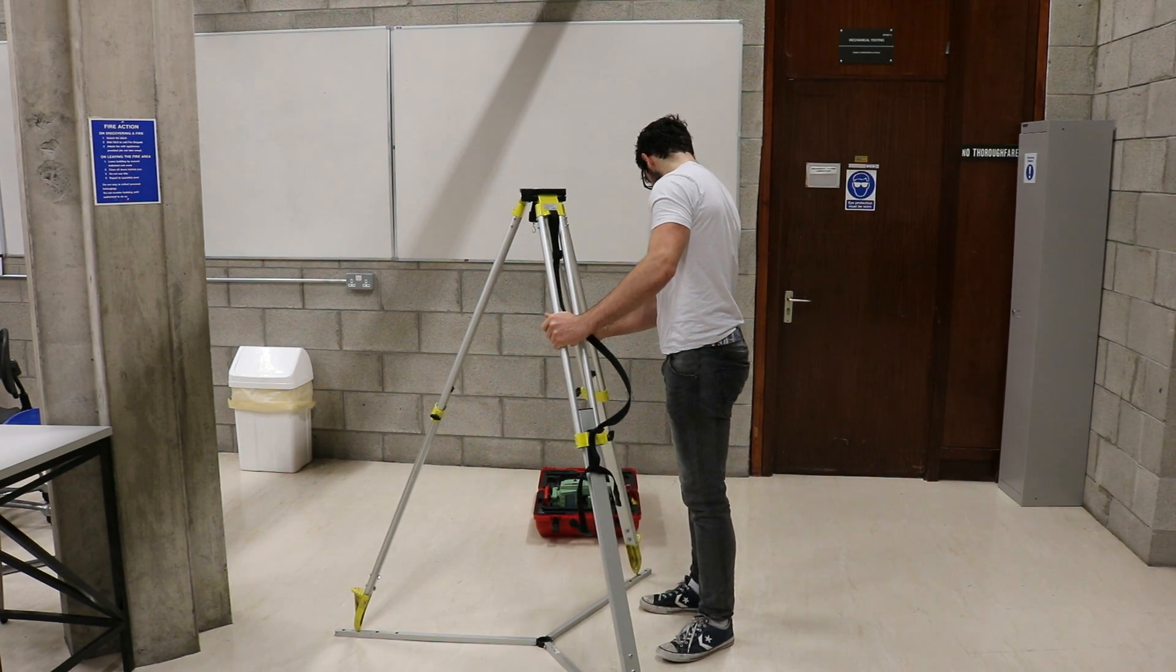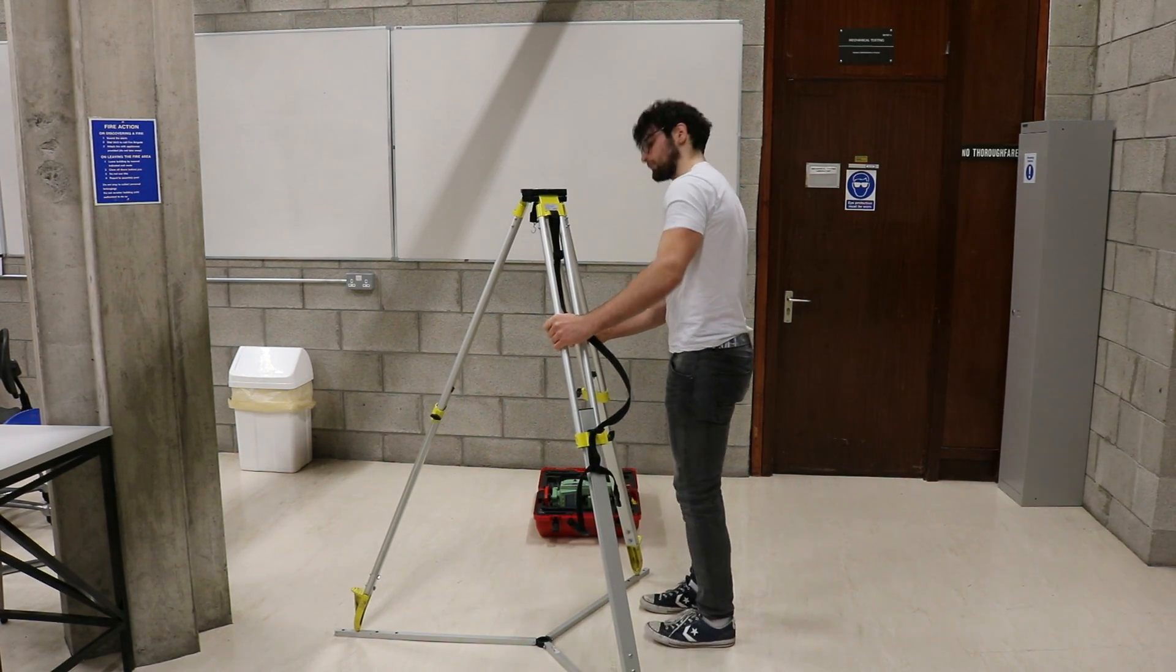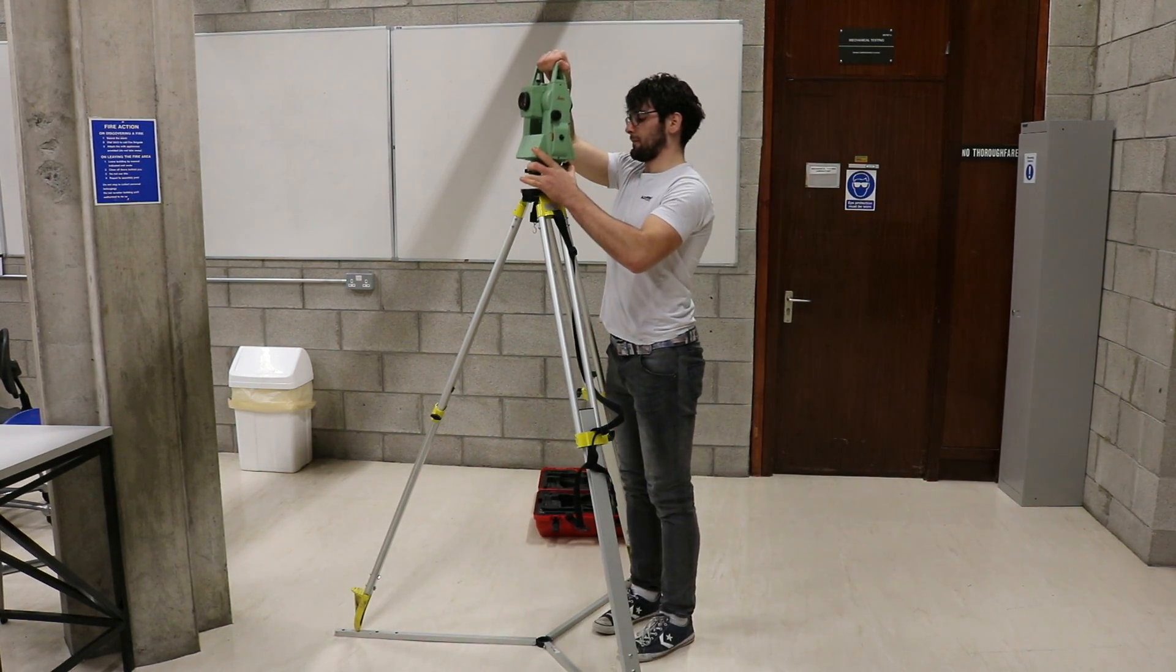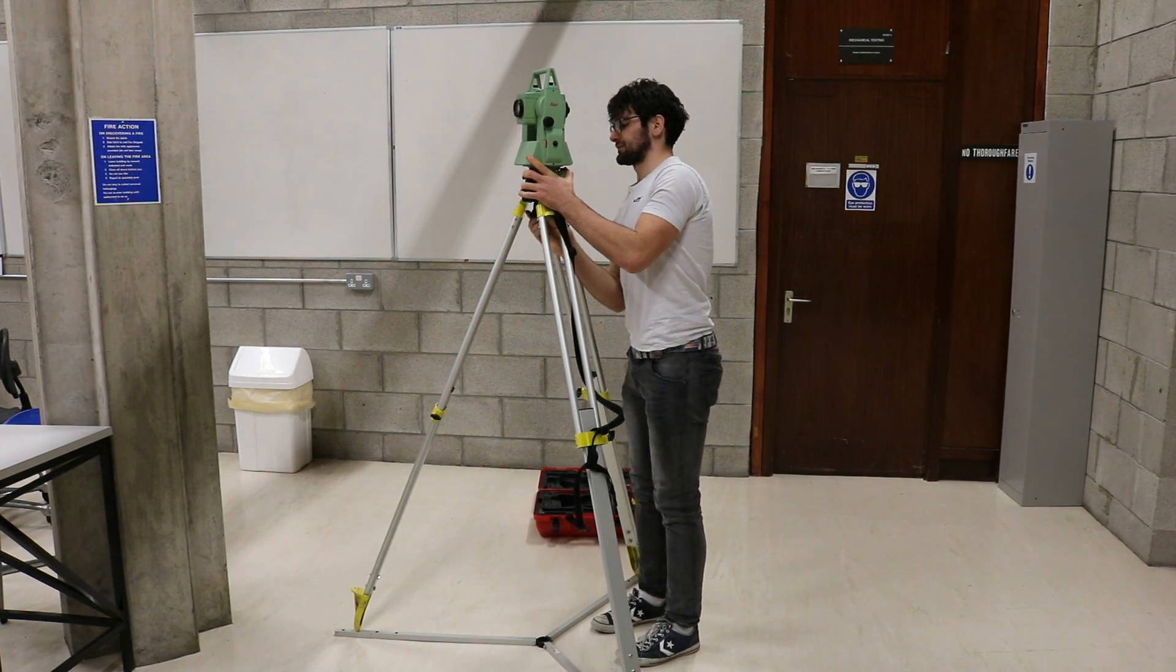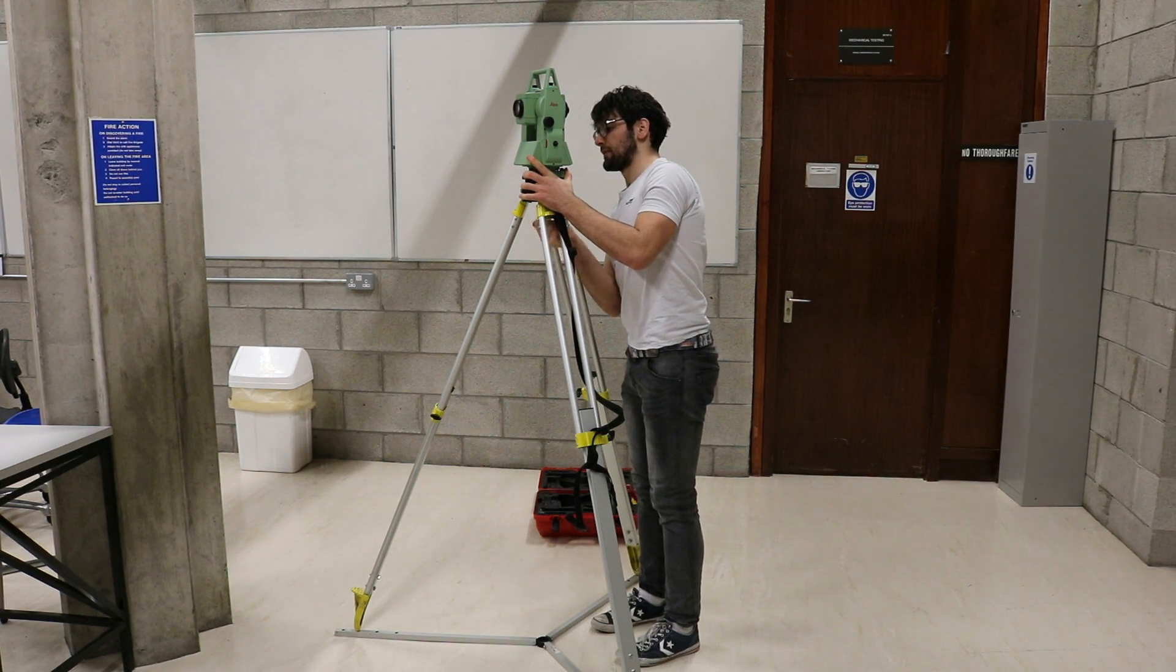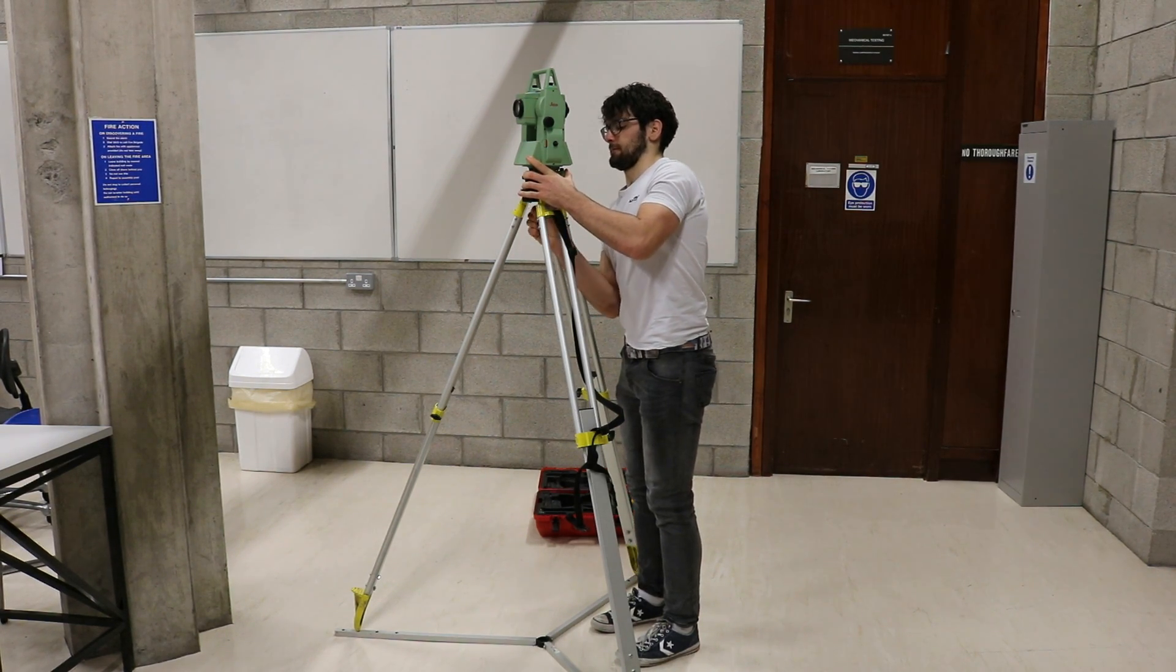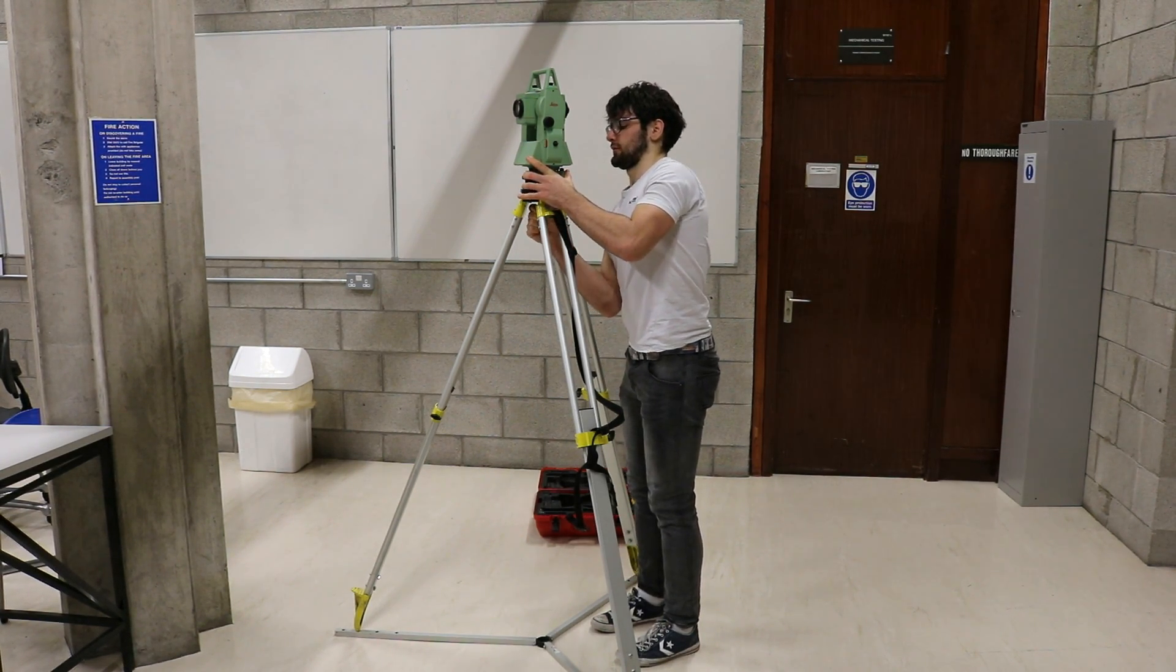Level the head of the tripod to a reasonably flat position if it is not already so, and then place the total station on the tripod with both hands. Whilst holding on to the total station with one hand, tighten the screw at the base of the tripod into the bottom of the total station to secure the machine.